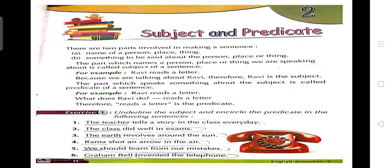In our previous chapter, that is chapter one, we have studied about sentence — what is a sentence. A sentence is a group of words that makes complete sense. That means a sentence is a group of words jinki complete meaning nikal ke aati hai. Any group of words that does not make complete meaning will not be your sentence. So we can say that a sentence is a group of words that make complete sense or complete meaning.